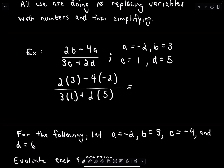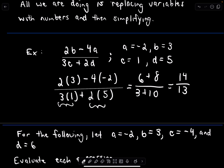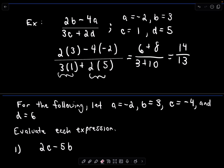Now we can do the arithmetic. In the numerator, 2 times 3 is 6, and negative 4 times negative 2 is positive 8. In the denominator, 3 times 1 is 3, plus 2 times 5 is 10. So we get 6 plus 8, which is 14, over 10 plus 3, which is 13. Since 13 is a prime number we can't factor it, and 14 is not a multiple of 13, so 14 over 13 is already fully reduced — that's our solution.